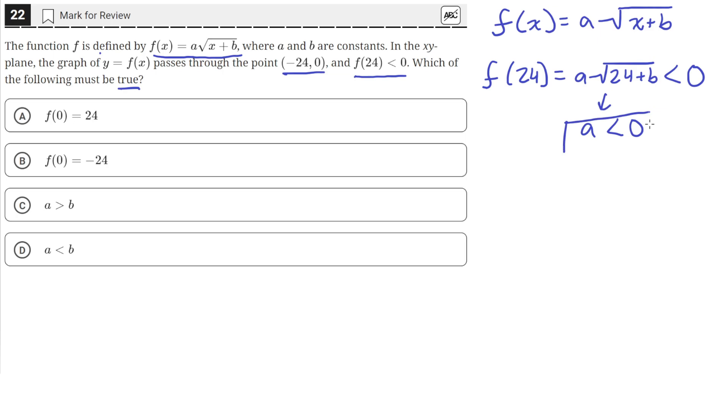Let's keep this conclusion in mind and use the other piece of information. The graph of f(x) passes through the point (-24, 0).